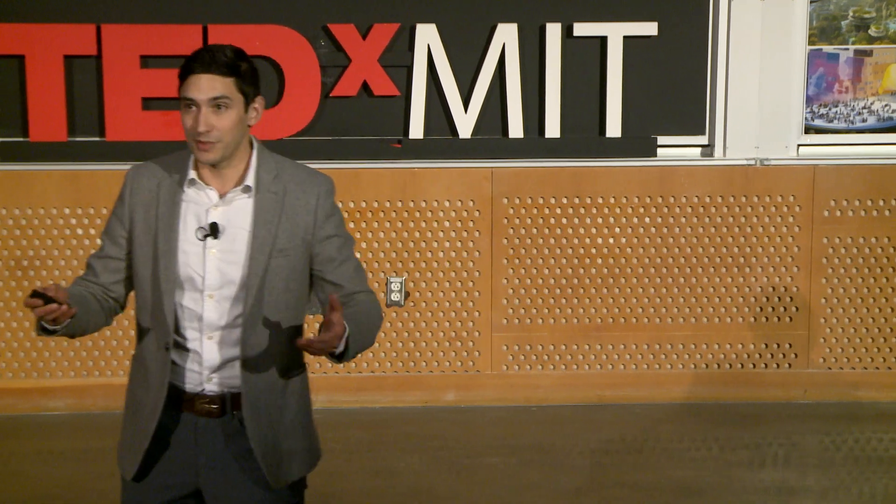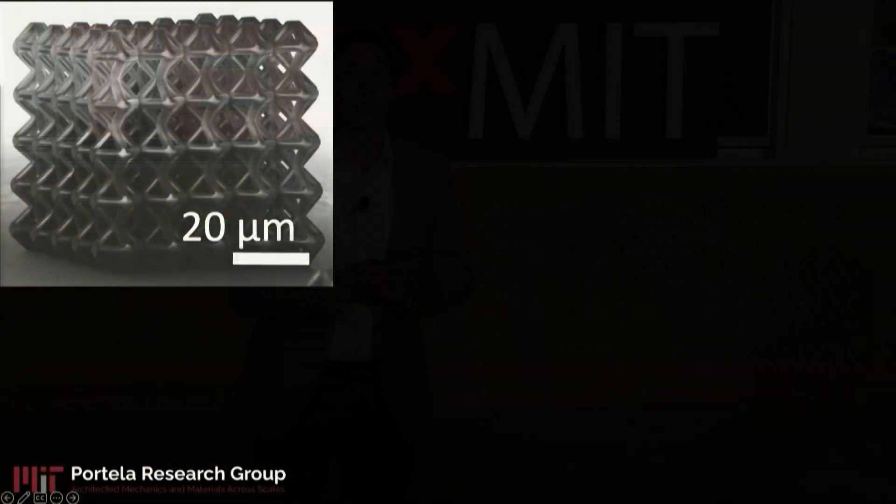So how do we make these materials? So this is one of the typical materials that we can make in our lab. This is a polymeric one. It's a 3D building block that we tessellate in all dimensions. And we basically make it with a 3D printer.